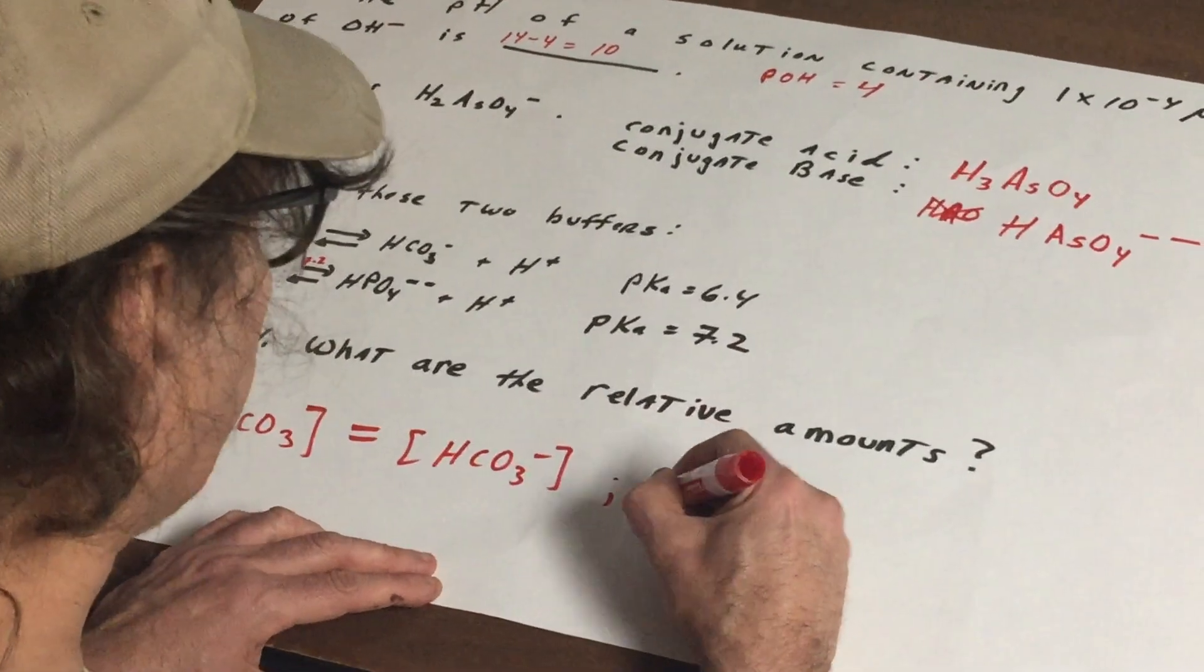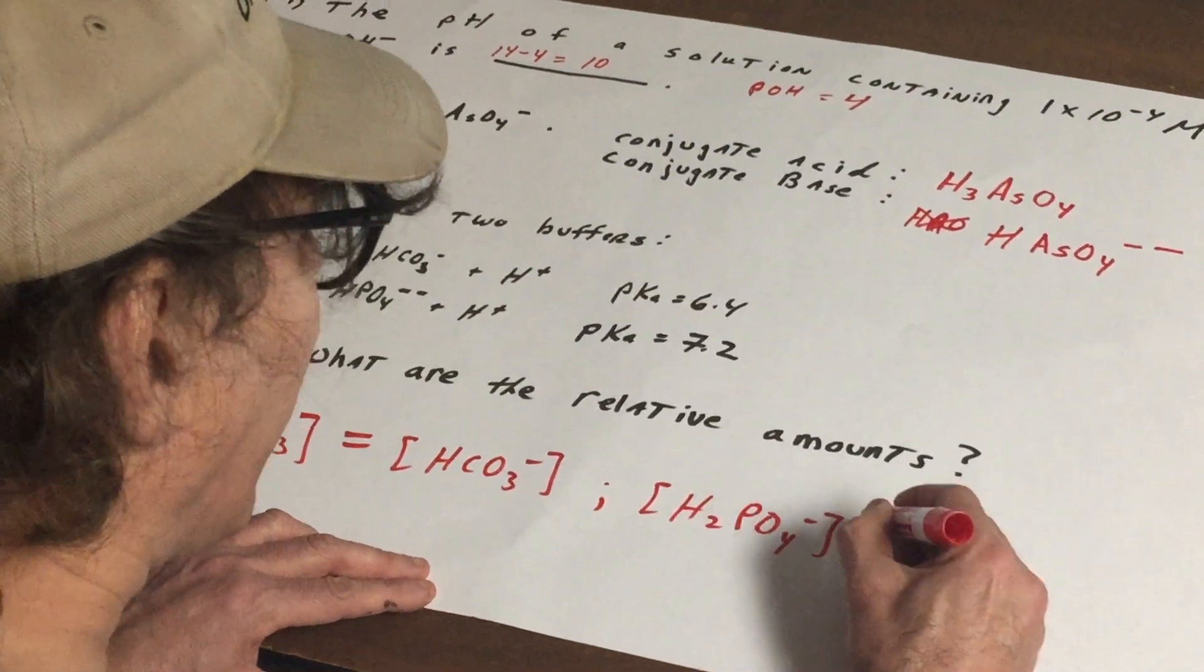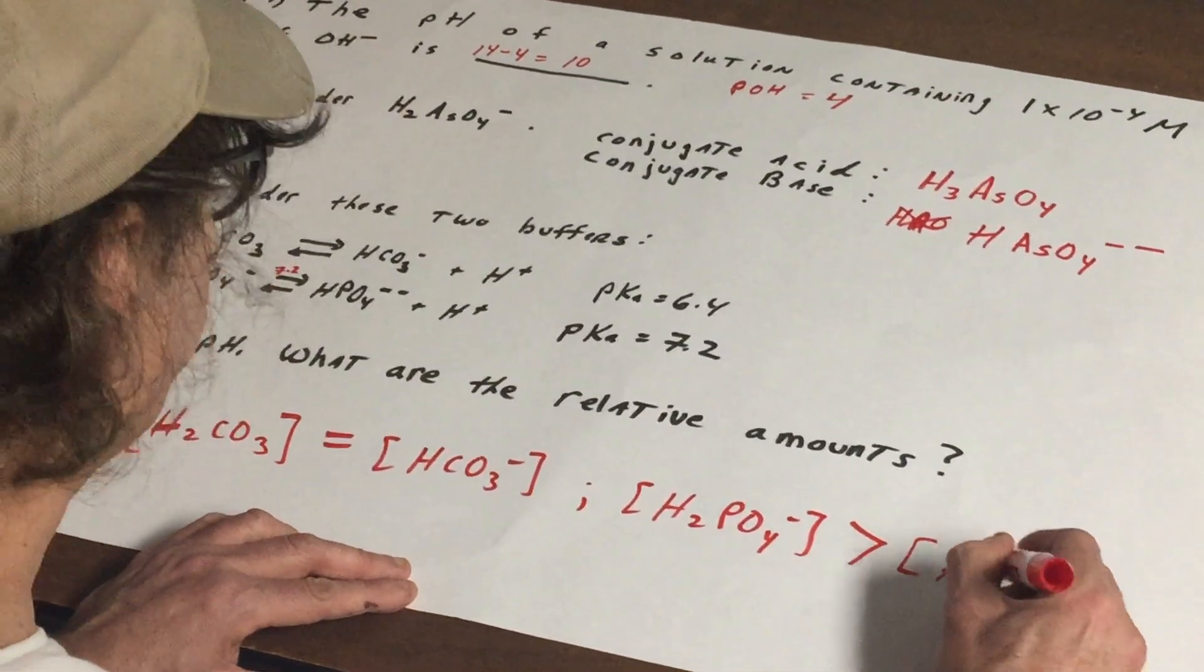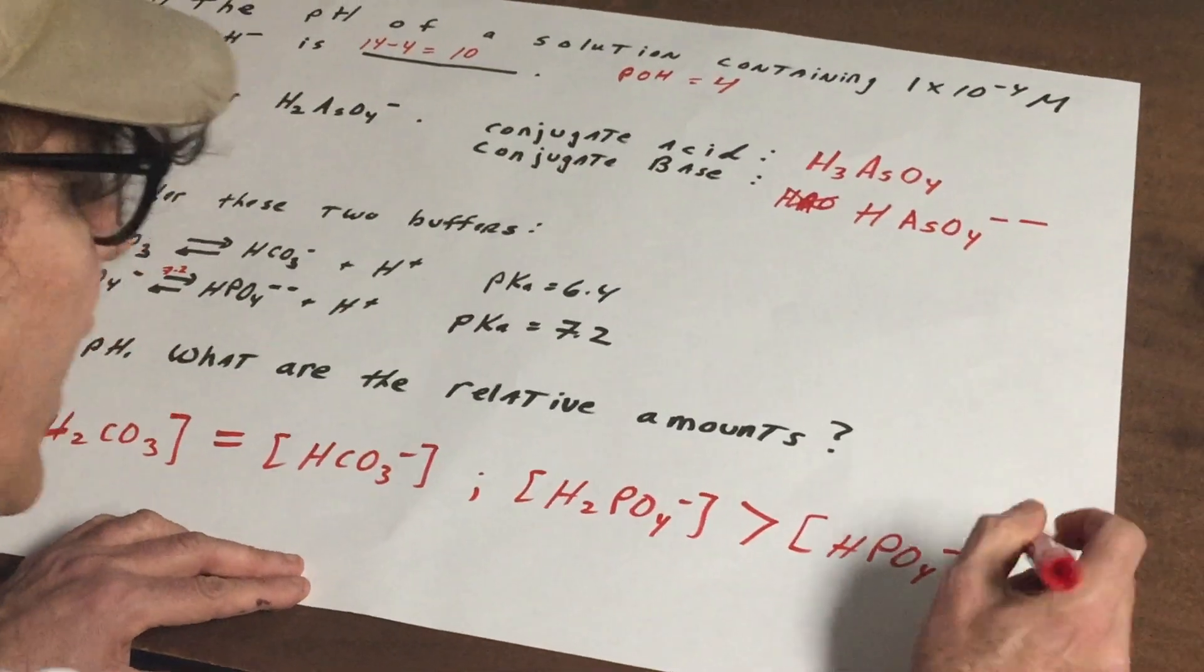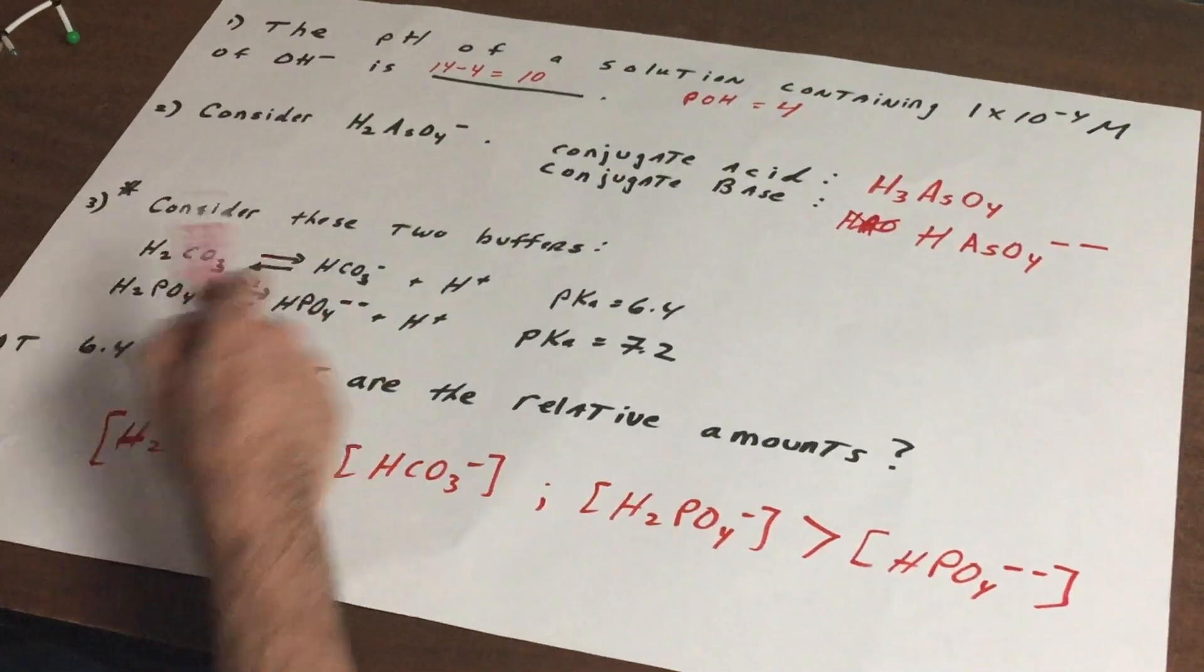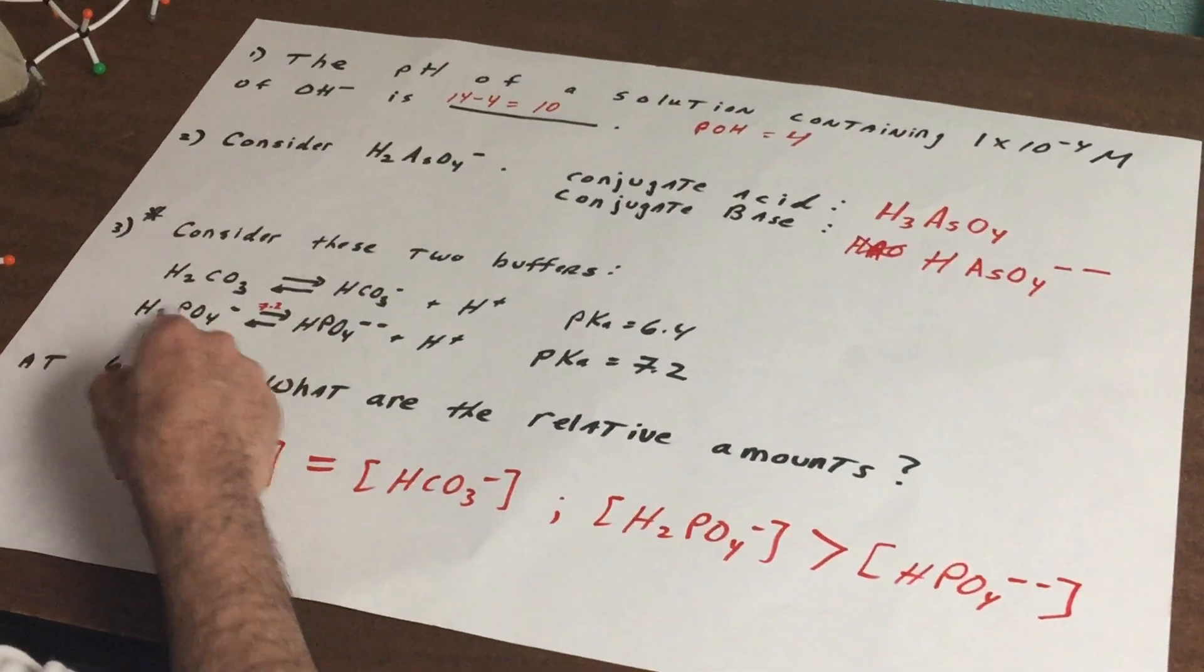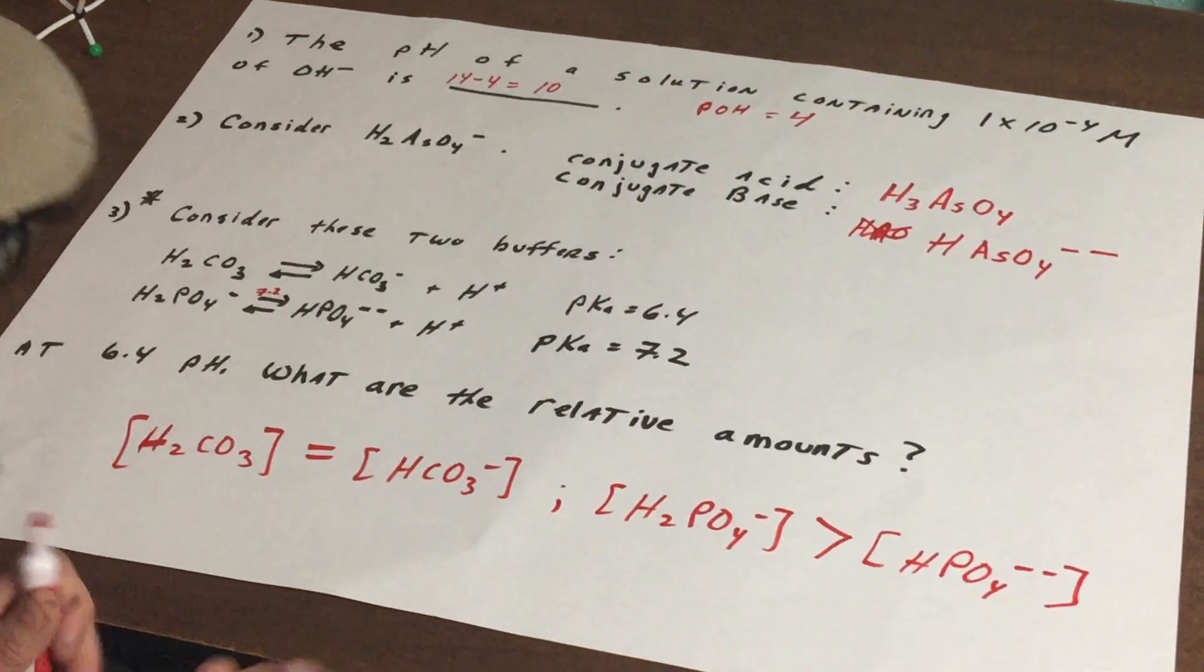So that would mean the concentration of the dihydrogen phosphate anion would be greater than the concentration of the monohydrogen phosphate anion. So there you have it. You would have equal amounts of the two species here and in the second one the predominant species would be the H2PO4- at its pH of 6.4.